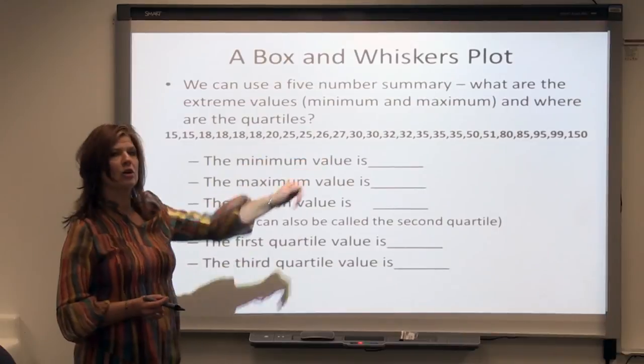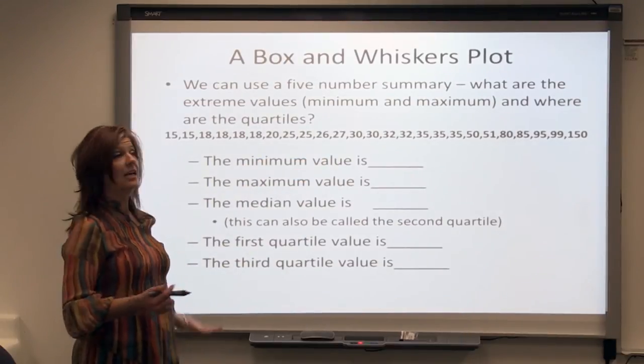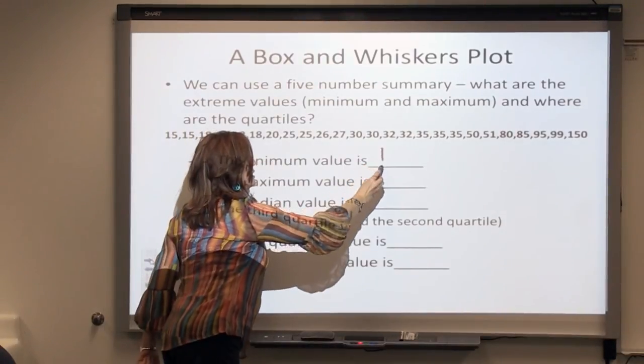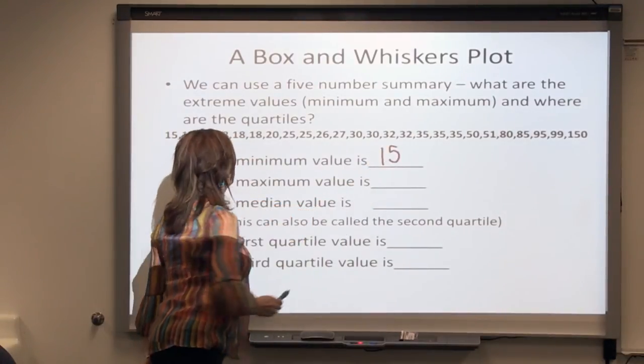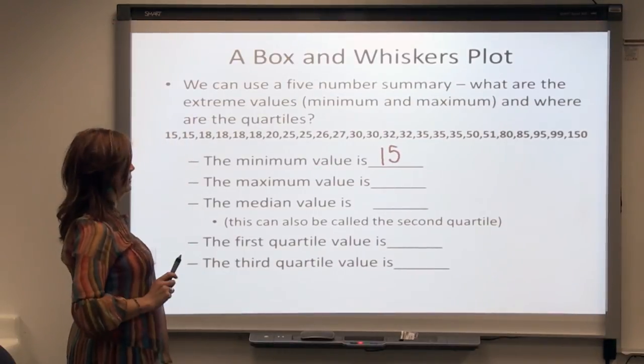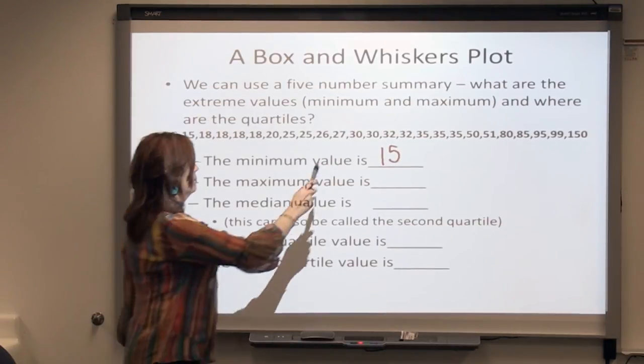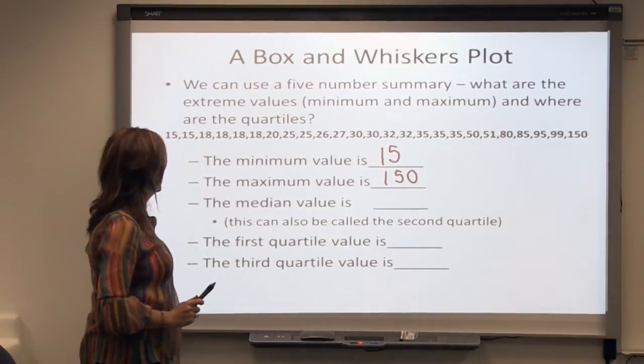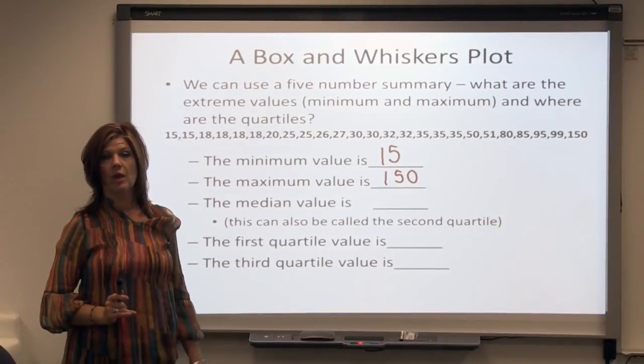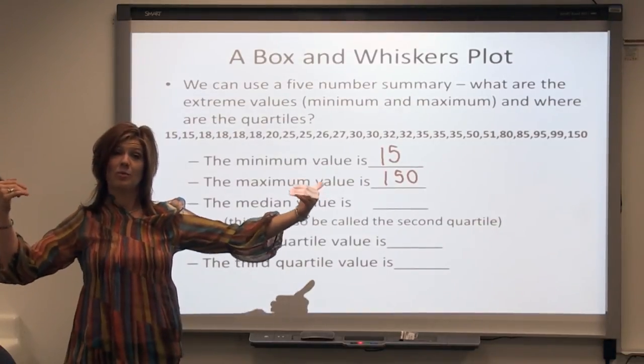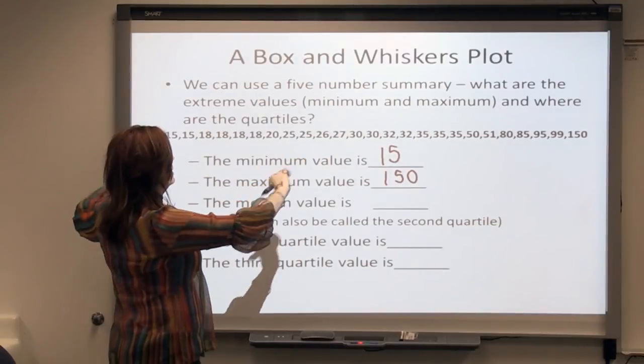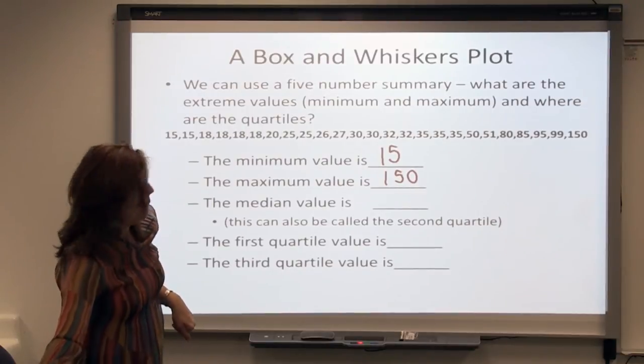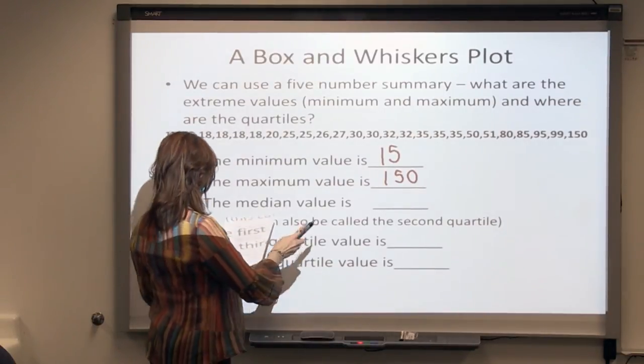So the minimum value, what's the minimum income? The numbers are listed least to greatest, so the minimum value I can see is $15,000. What's the maximum income? $150,000. Now, what's the median value? These are conveniently lined up from smallest to greatest, so what I want to do to find the median is which number is in the very center. The median value happens to be $30,000.